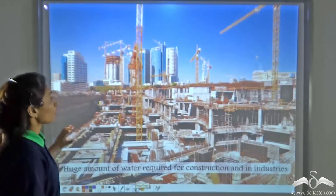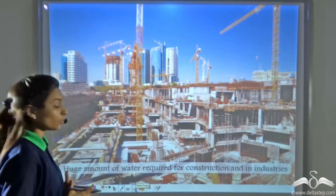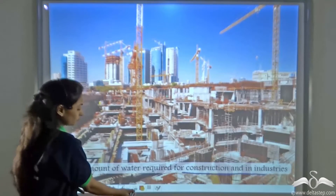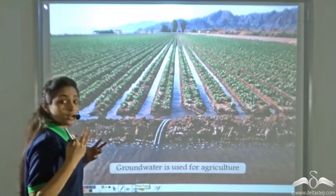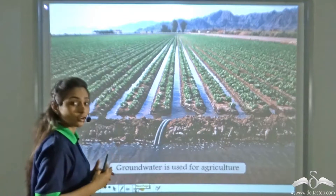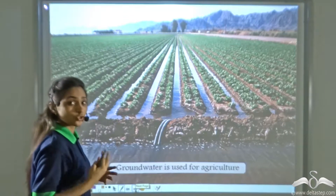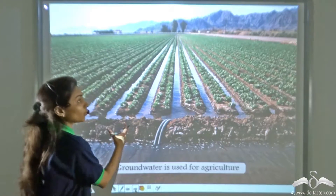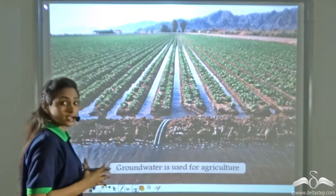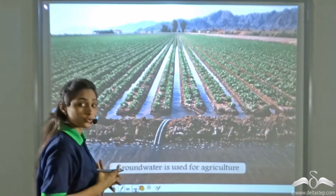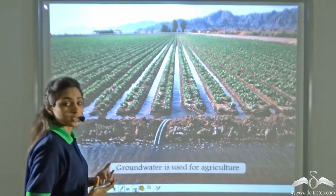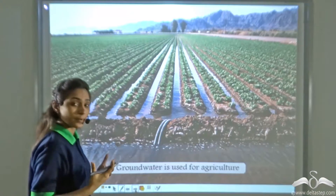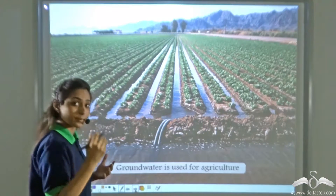Moreover, we also use a large amount of groundwater for construction and industry purposes. Many farmers depend on rainwater for farming, but in years with little or no rainfall, and when canals go dry, groundwater is used in agriculture. So there are large amounts of uses of groundwater. We are using it continuously but not allowing rainwater to replenish it, so the groundwater level is depleting day by day.